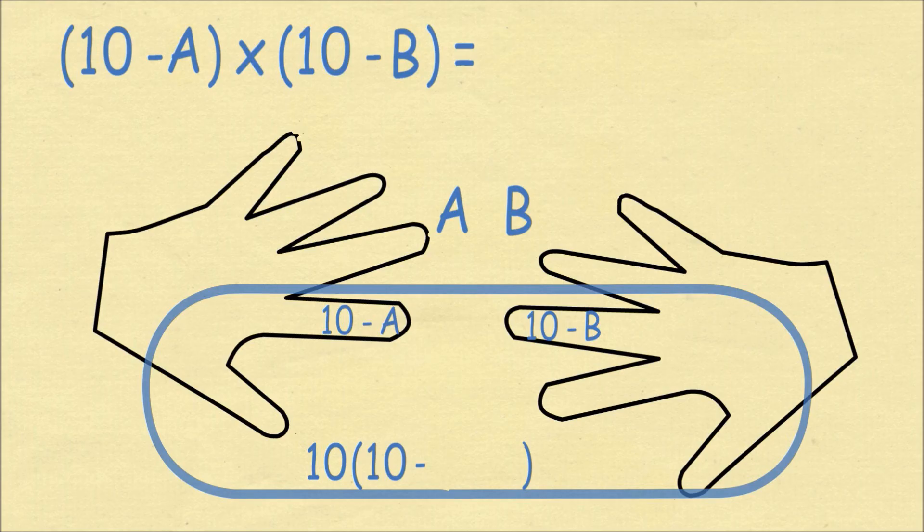Now how many fingers are below the touching fingers? Well, we subtract A fingers on the left and B fingers on the right from 10 in total. So this becomes 10 times 10 minus A minus B. We then multiply the A and B fingers which are above to get AB.